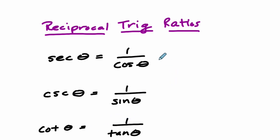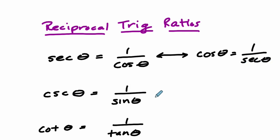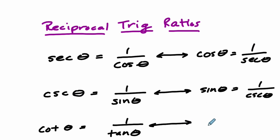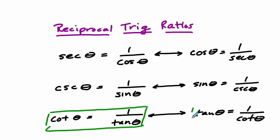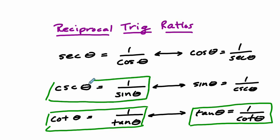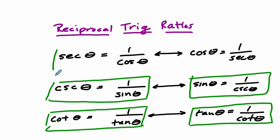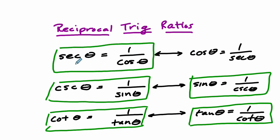You might also say this is true if and only if: the cosine of theta is also equal to the reciprocal of the secant of theta. It's also true that the sine of theta is equal to the reciprocal of the cosecant of theta. They're reciprocals of each other, of course. The tangent of theta is the reciprocal of the cotangent of theta. All I did was swap the locations of tangent and cotangent, cosecant and sine, and secant and cosine.